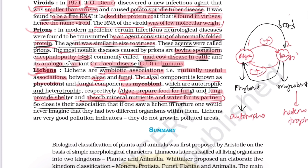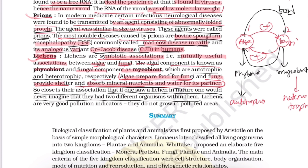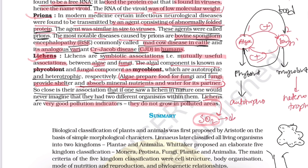Their association is so close that if one saw a lichen in nature — for example, on the trunk of many trees — one would never imagine that there are two different organisms within it. Lichens are very good pollution indicators; they do not grow in polluted areas. Notably, lichens are very sensitive to sulfur dioxide (SO2) and do not grow in SO2-polluted areas.